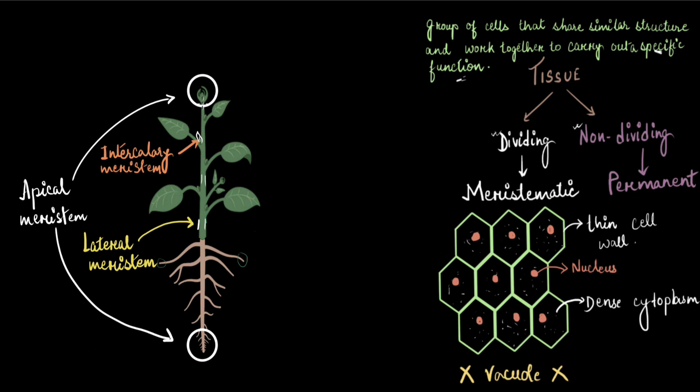That's why if you ever try to cut off the tip of the shoot of any plant, after a few days you will see that a new shoot is arising from this intercalary meristematic area from the nodes, because that is where the meristematic tissue is.